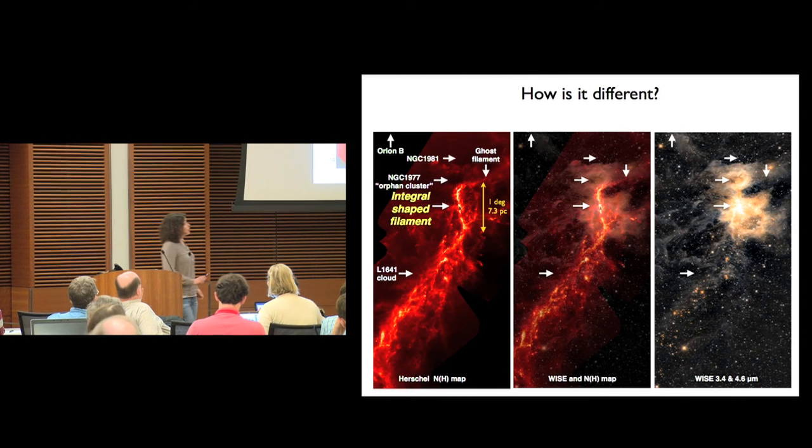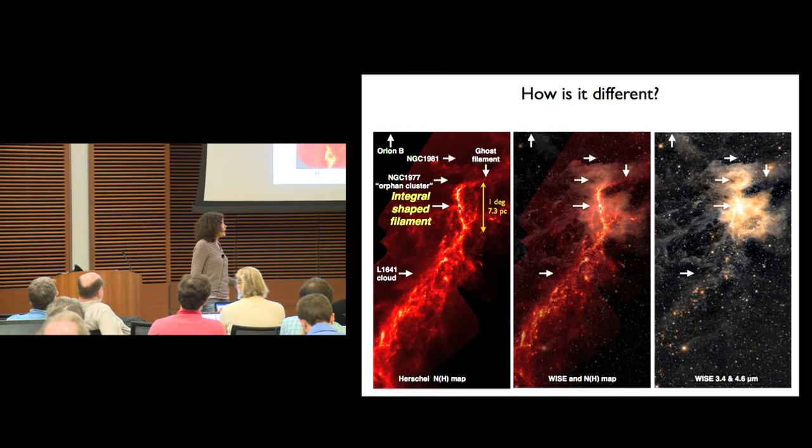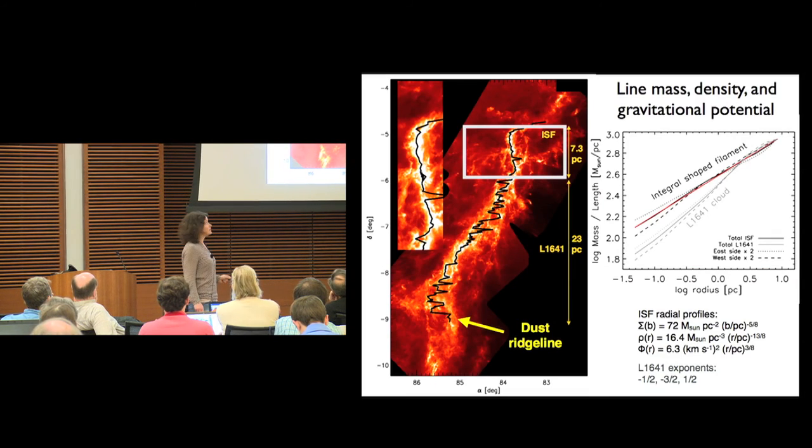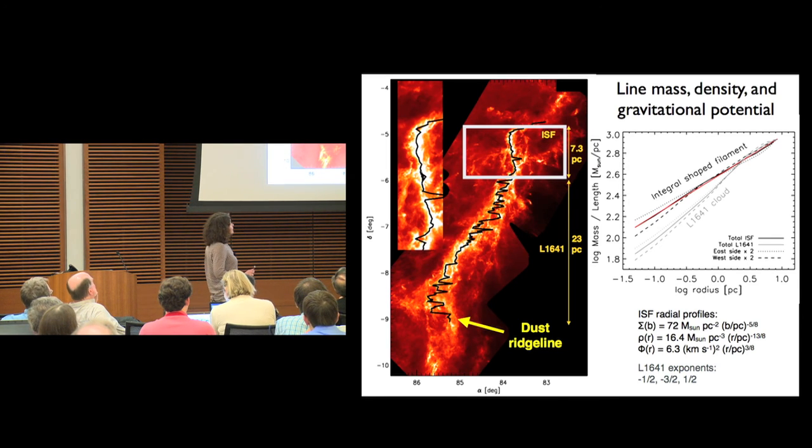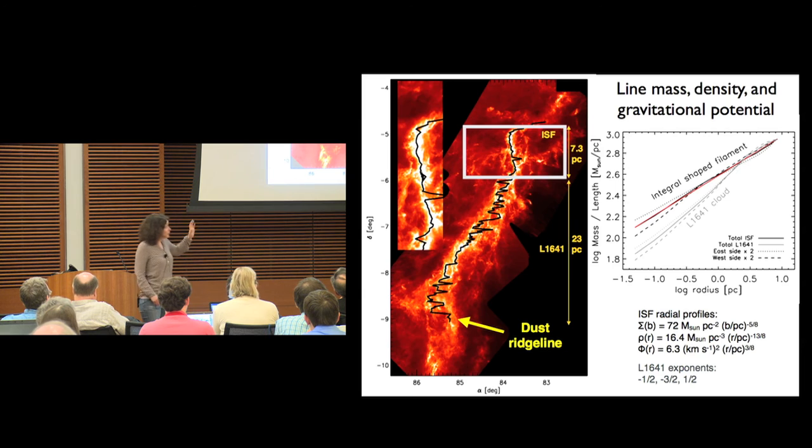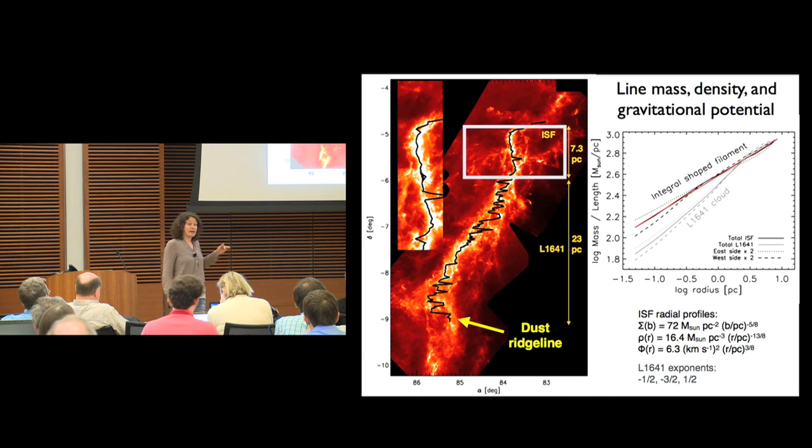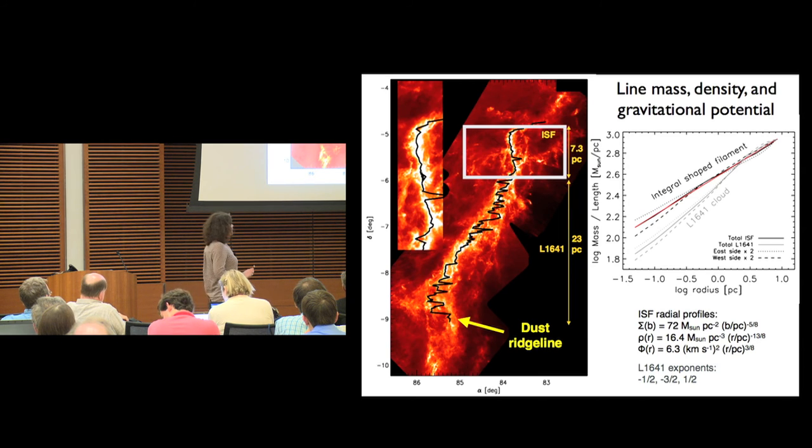Using one of these Herschel dust column density maps, we extract the line mass profile for the integral-shaped filament in the north and the southern portion of the cloud, L1641. The line mass profile as a function of impact parameter from this dust ridge line is very well characterized by a power law, both in the north and in the south. In the north, the structure is completely dominated by one filament, whereas in the south, we're averaging over more structures. But the L1641 profile converges with the integral-shaped filament profile at large radii.